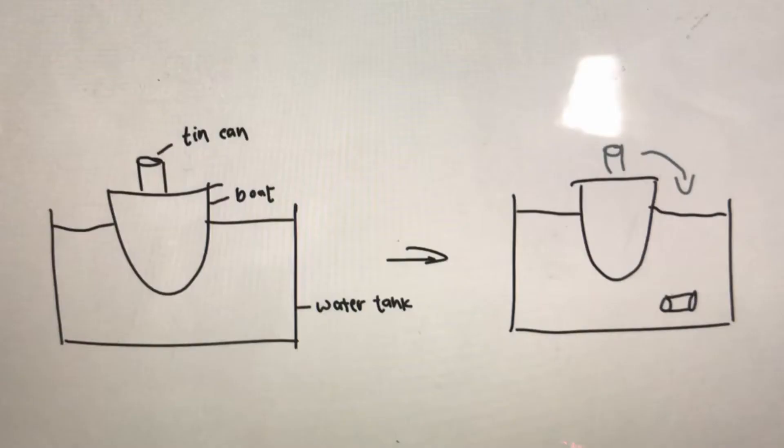I'm just going to go straight into the solution in this video, but if you're curious as to how I answered it on the spot during the interview, I talk about it in my previous video. It's useful to think of the default scenario as just the water tank with the boat floating on top — let's just pretend there is no tin can. Now, let's say the tin can falls into the water; it is going to sink because the tin can is more dense than the water, and so it will displace the water, which causes the water level to rise.